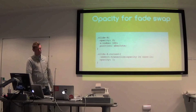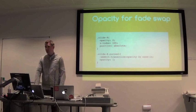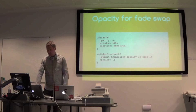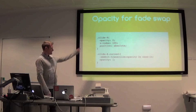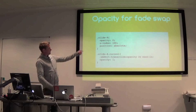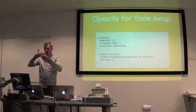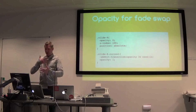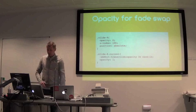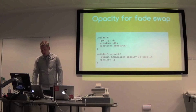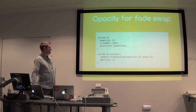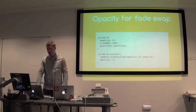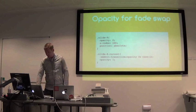Probably one of the most common transitions you'd want to do is a fade swap — that's one you see a lot. That is just using an opacity change, but using z-index and absolute positioning so you've got something directly over the top of something else and changing the opacity of one. It's that simple to transition any element of the DOM in that way.